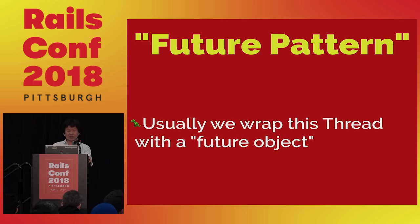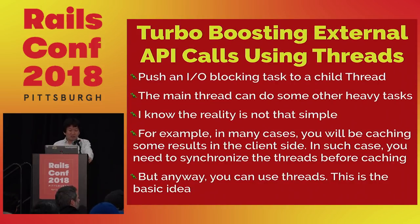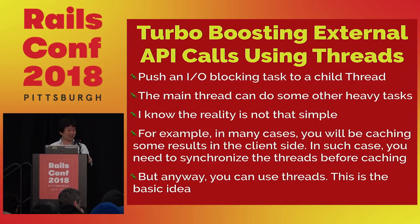Usually we don't use the raw thread object but wrap it in another object — that's called the future pattern. With this basic idea in mind, let's proceed to the next topic. The key idea is to push an IO-blocking task to a child thread and do something else in the main thread.